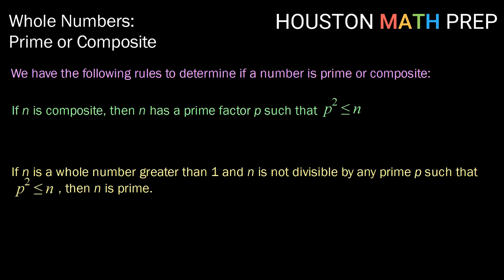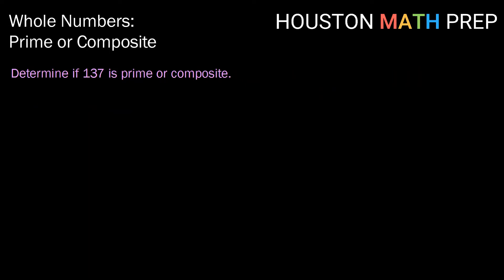So this just says the opposite. If n is a whole number greater than 1 and n is not divisible by any primes such that p squared is less than or equal to n, then n is prime. So let's take a look at that in an example.